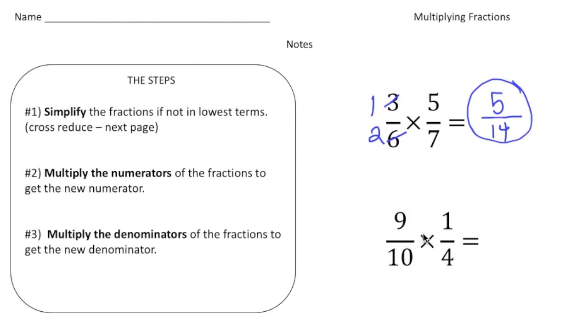Now we need to multiply the numerators. 9 times 1 is 9. And 10 times 4 is 40. So 9/40, that's our answer. Let's turn the page.